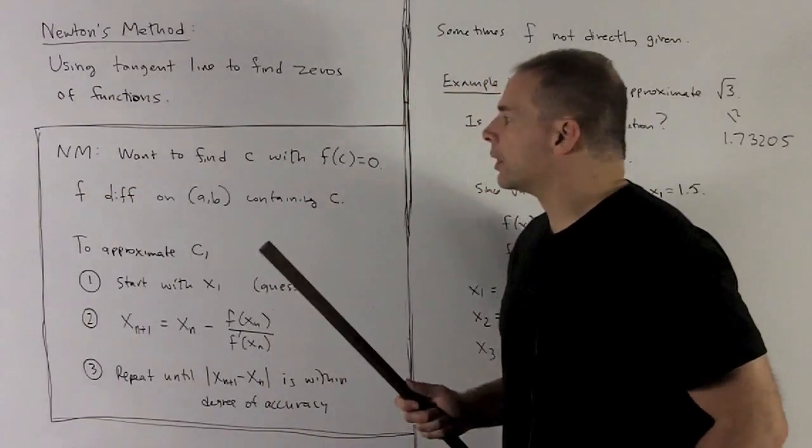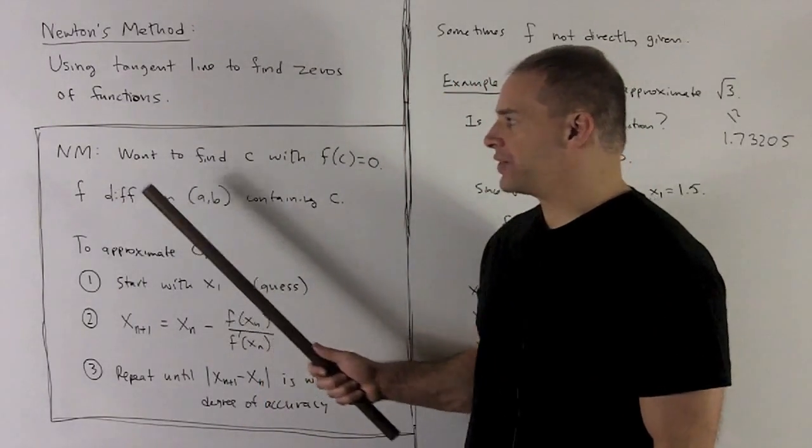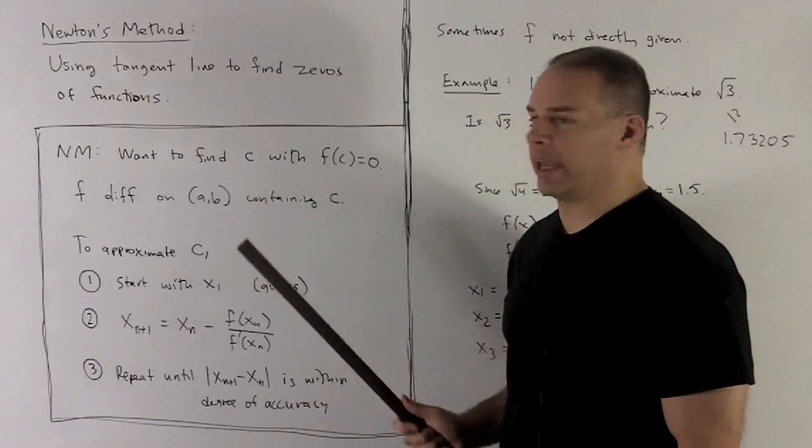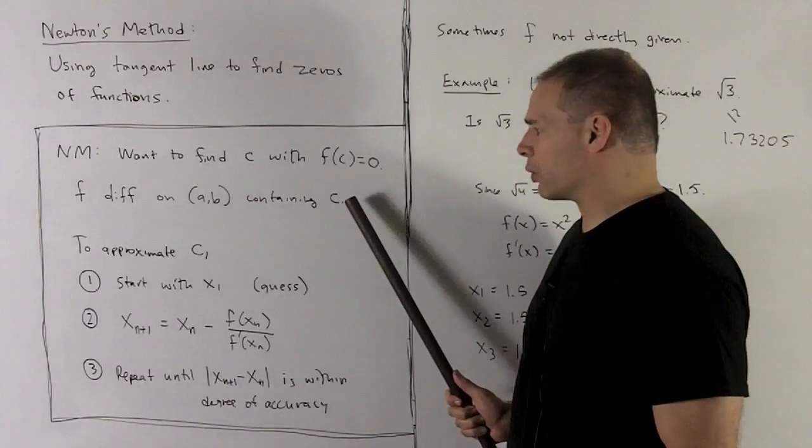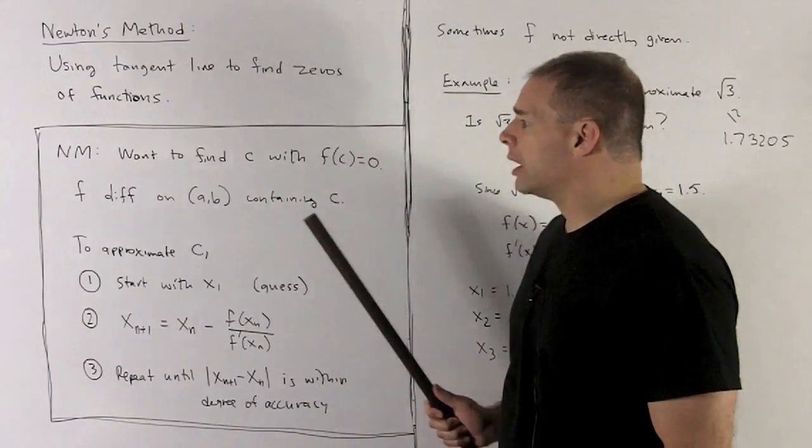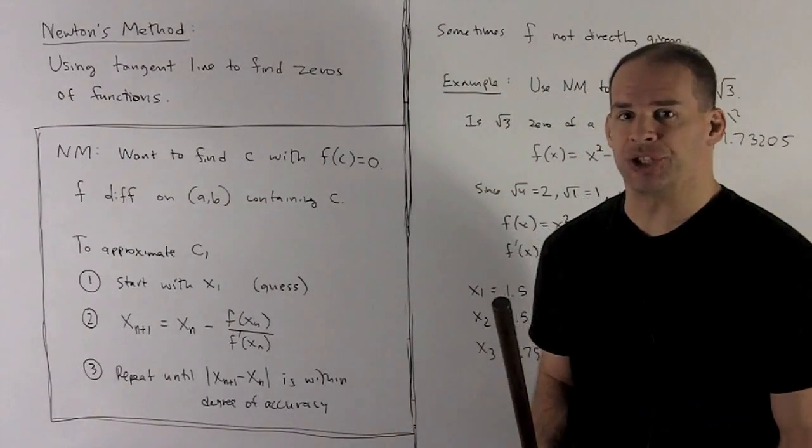So the statement, what we're going to have is, f is a differentiable function on an interval a, b that contains a root c. When I approximate c, we're going to have this procedure.